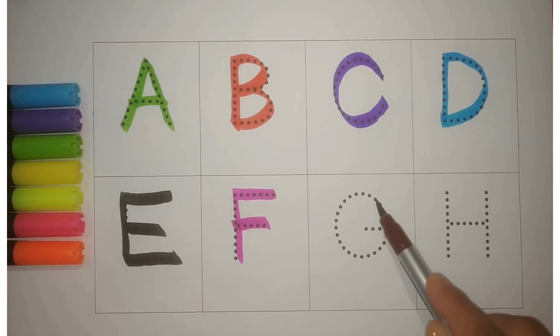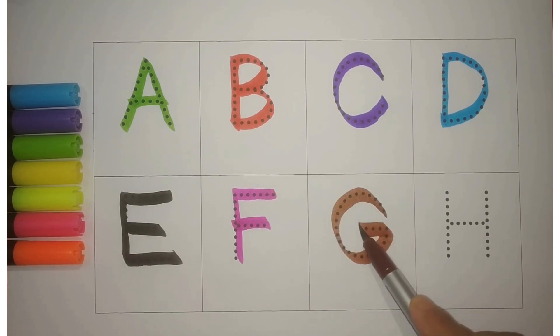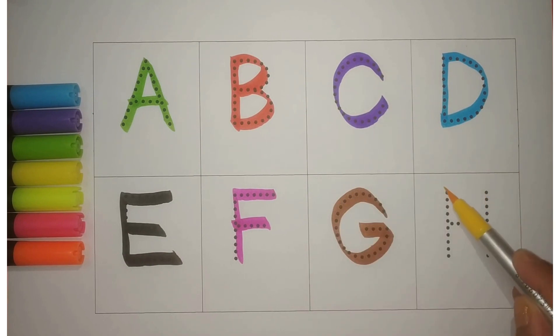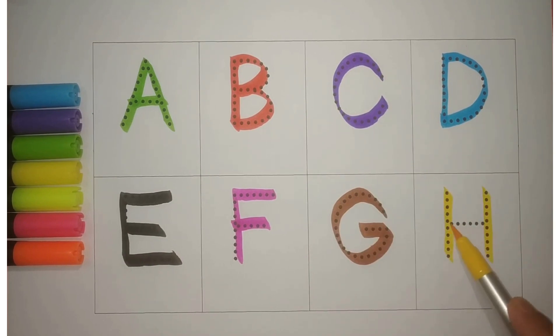Brown G. G for goat, bakri, meh. And yellow H. H for horse, khoda.